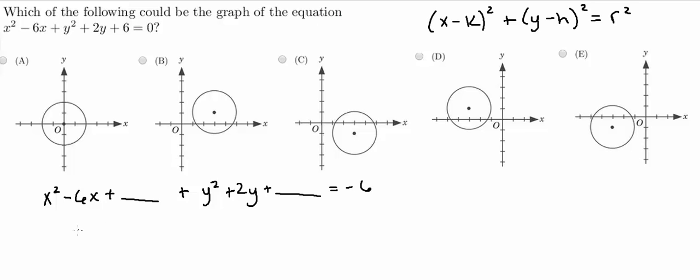So negative 6 divided by 2 is negative 3 and then 3 squared is 9. So we're going to put a 9 here and once we do that, we have to add 9 here.